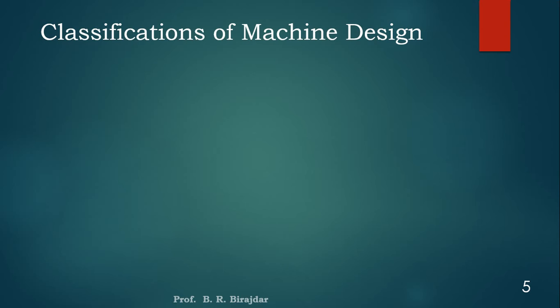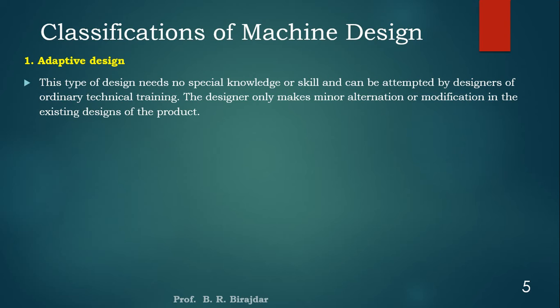Now we will see the classifications of machine design. Machine design is broadly classified into three types. The first is adaptive design. This type of design needs no special knowledge or skill and can be adopted by designers with ordinary technical training. The designer only makes minor alterations or modifications in the existing design of a product — whatever the previous design is, we adopt it as-is or with minor changes. That is called adaptive design.